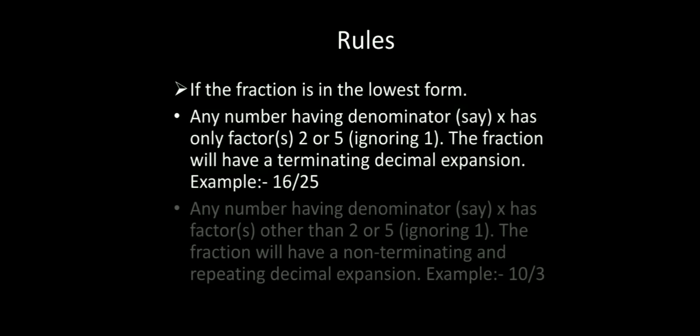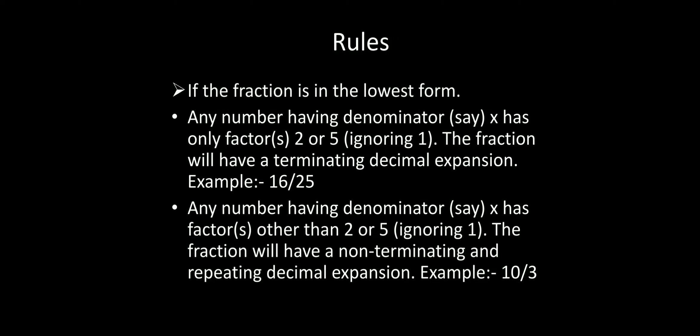So 10/3 was a non-terminating recurring decimal, while 25/16 was a terminating decimal. Now the rules to identify whether a fraction is terminating or non-terminating repeating: first, the fraction should be in its lowest form, then check the factors of the denominator. If the denominator has only 2, only 5, or both 2 and 5 as factors, the decimal is terminating. If it has 2 or 5 along with any other factor, or neither 2 nor 5, it is non-terminating and repeating.